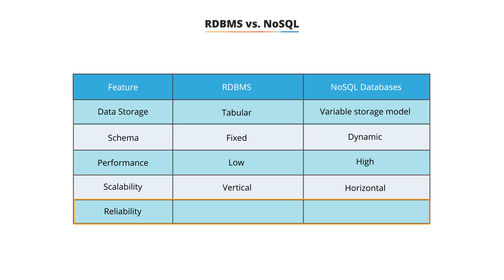Reliability: relational databases are highly consistent and reliable. Most NoSQL databases do not support reliability features such as atomicity, consistency, isolation, and durability, which are natively supported by a relational database.